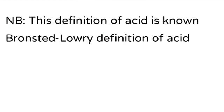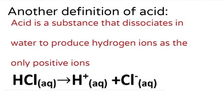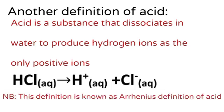This definition of acid is known as the Bronsted-Lowry definition of acid. An acid can also be defined as a substance that dissociates in water to produce hydrogen ions as the only positive ions. For example, HCl dissociates in water to form hydrogen ions, which are the only positive ions, plus a chloride ion. This definition is known as the Arrhenius definition of acid.